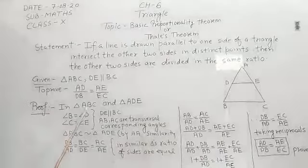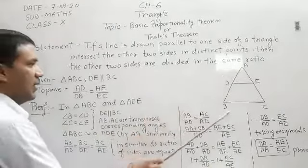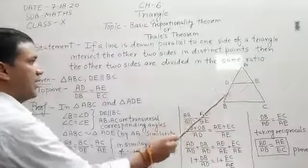So proof is in triangle ABC and triangle ADE. This is triangle ABC and this is triangle ADE.